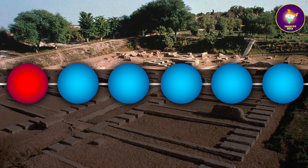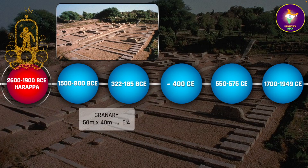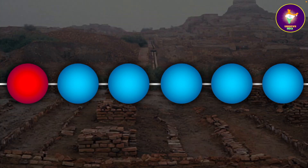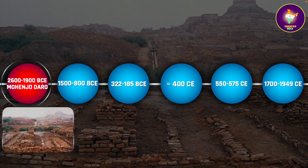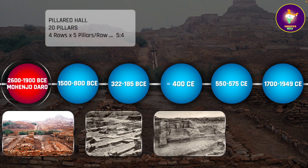Remaining in the same time period of 2600 to 1900 BCE, we travel to Harappa where the granary had dimensions of 50 meters by 40 meters — again in the ratio of 5 to 4. Moving on to Mohenjo-daro, excavations have revealed a pillared hall of approximately 750 square meters or 8,100 square feet, with 20 pillars in four rows of five each, made of kiln-baked bricks — again the ratio of five to four. What this hall was used for is not very clear; perhaps public assembly, ceremonies, entertainment, or even an educational institution.